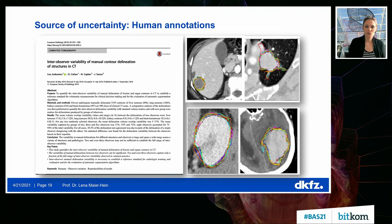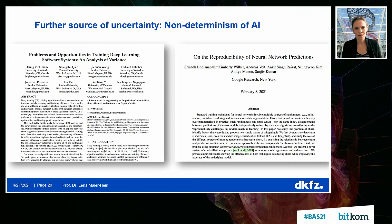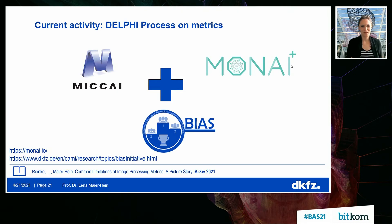The same holds true for the AI part. There is now more and more work on the non-determinism of AI. Some things are obvious, like random seeds, but some are not — for example, the dependency on the GPU and how operations are computed on the GPU introduces randomness, such that if you use the exact same training data and the exact same architecture, you will get different outputs. All of these things have to be considered together by machine learning experts and domain experts. This is one of the things we are currently doing, joining three initiatives: the MICCAI Society, MONAI, and the BIAS initiative — working on best practice recommendations for metrics.